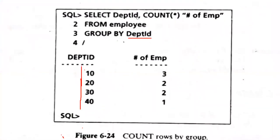In the SELECT clause, we select department ID column and the COUNT group function to count the number of employees from the employee table, grouped by department ID. For example, department ID 10 has 1 employee count, and department ID 30 has 2 employees. That's the output — that's how we apply the COUNT group function.